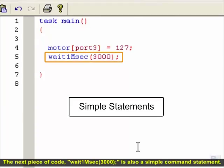The next piece of code, wait1msec3000, is also a simple command statement. It directs the robot to wait for 3000 milliseconds.